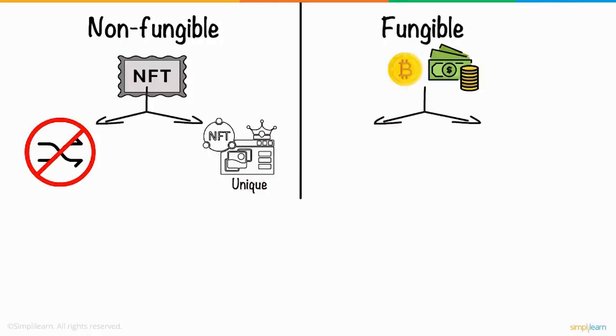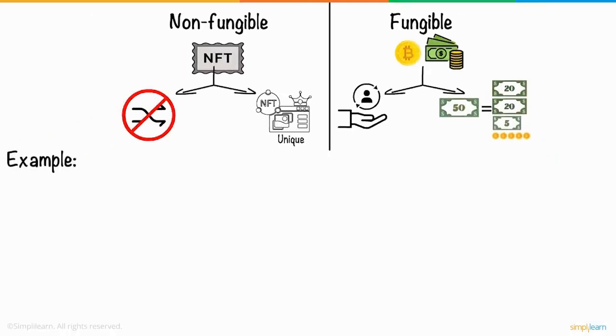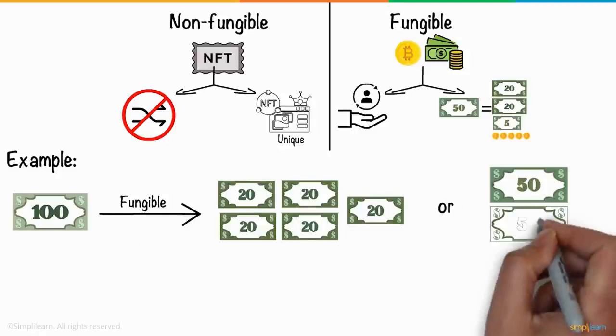For example, a $100 bill is fungible as you can exchange it with five $20 bills or two $50 bills. But the painting of the Last Supper is non-fungible as it cannot be generated in bulk.